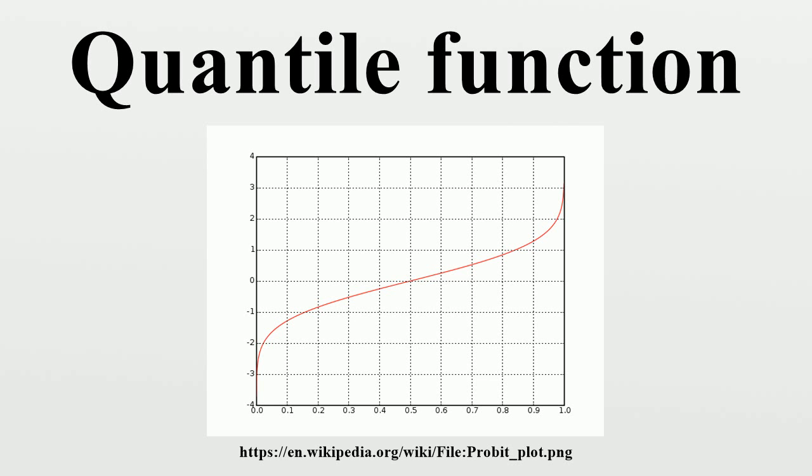The normal distribution. The normal distribution is perhaps the most important case, because the normal distribution is a location-scale family. Its quantile function for arbitrary parameters can be derived from a simple transformation of the quantile function of the standard normal distribution, known as the probit function.